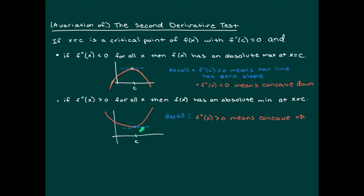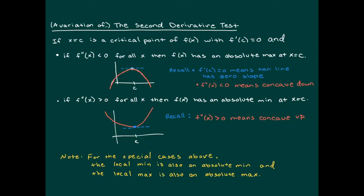Similarly, if we have a critical point where the first derivative equals zero and the function is concave up for all x — meaning the second derivative is greater than zero for all x — then we have an absolute min at x equals c. From previous videos we distinguished between local and global maxes. The beauty of this theorem is that the local maximum also happens to be the absolute maximum, and the local min also happens to be the absolute min. So we don't have to distinguish between local and absolute max or min.